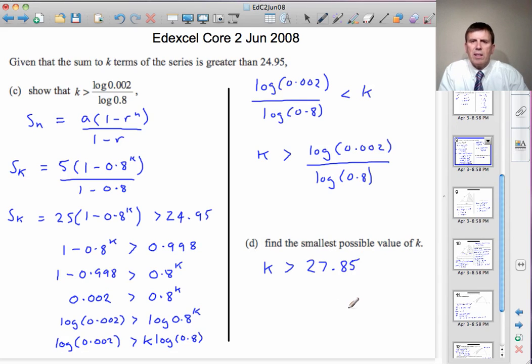But k is an integer, because k is the number of terms. And we want the smallest value of k. So the minimum k would be 28.